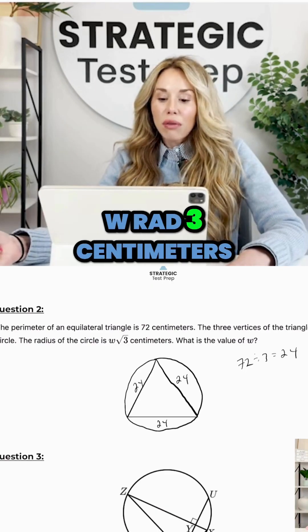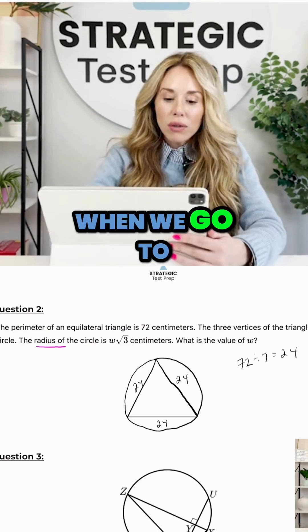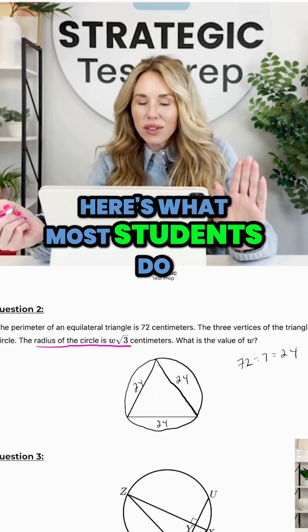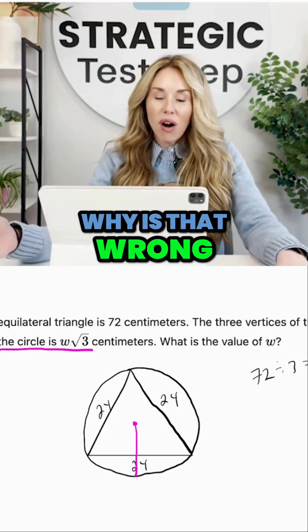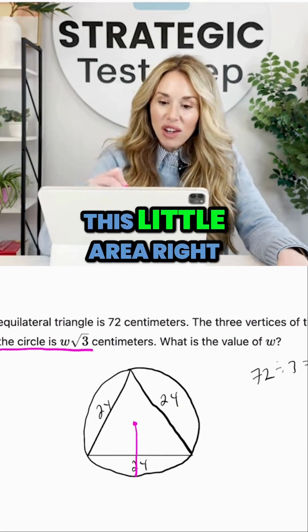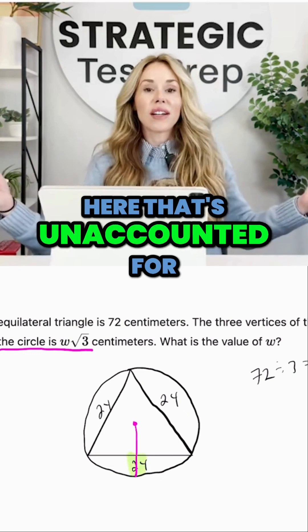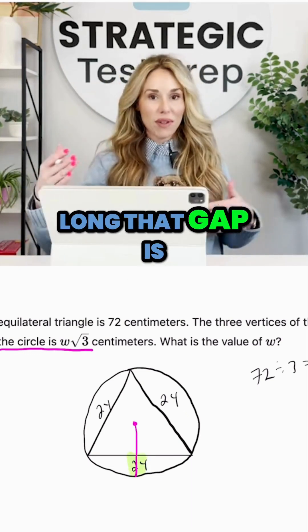The radius of the circle is w√3 centimeters. When we go to draw the radius, here's what most students do and this is a grave mistake. Why is that wrong? Well, you end up with this little area right here that's unaccounted for. We don't know how long that gap is, that's going to block you.